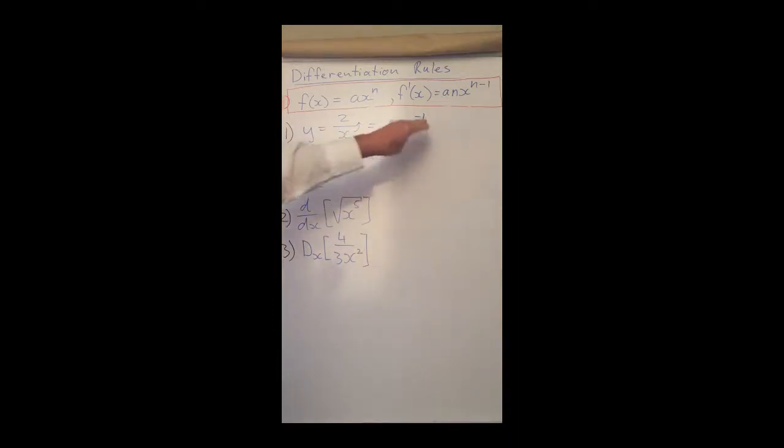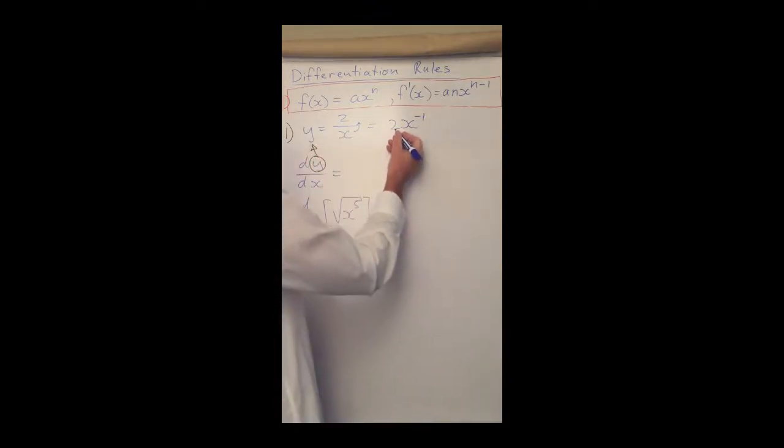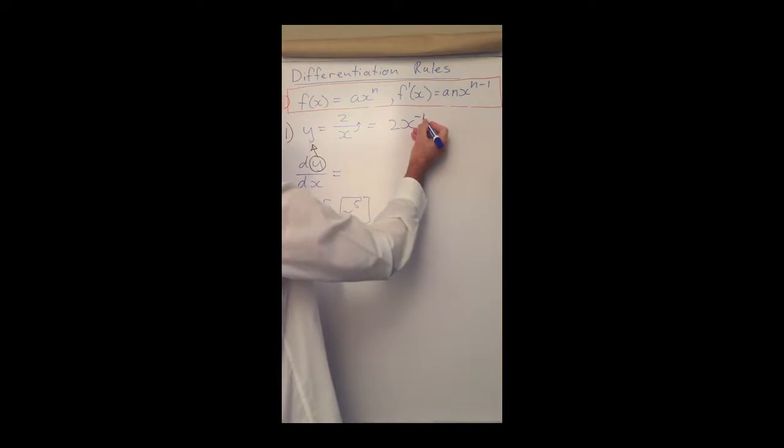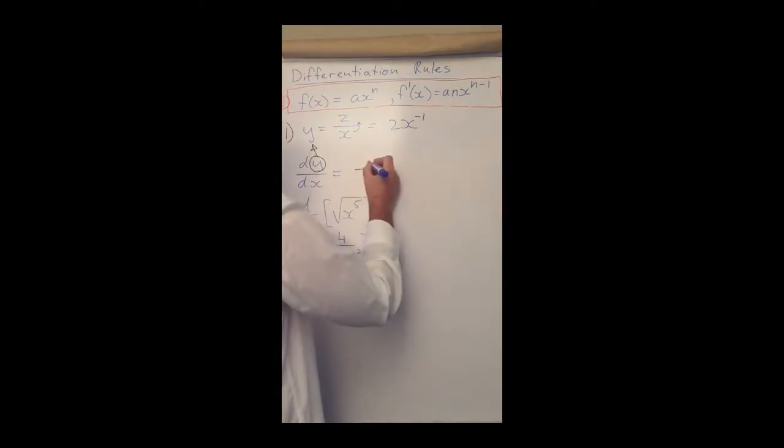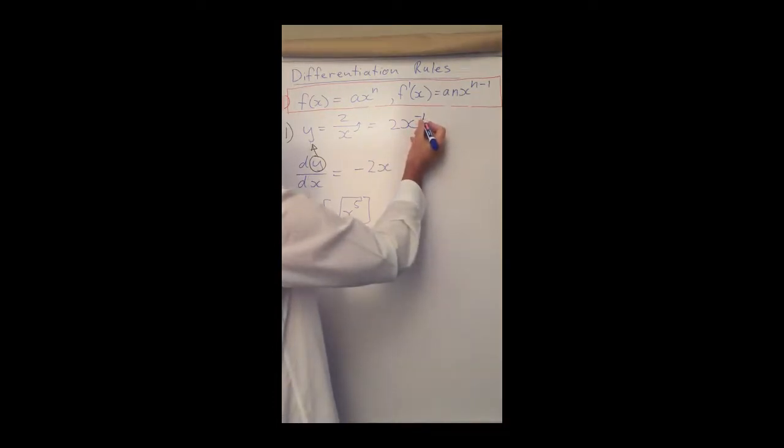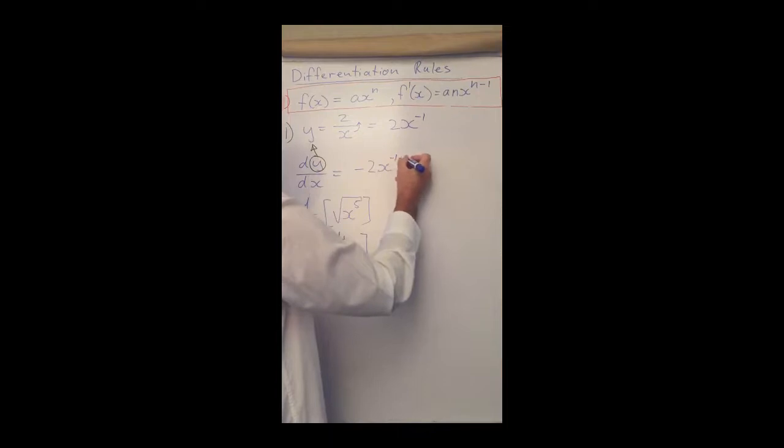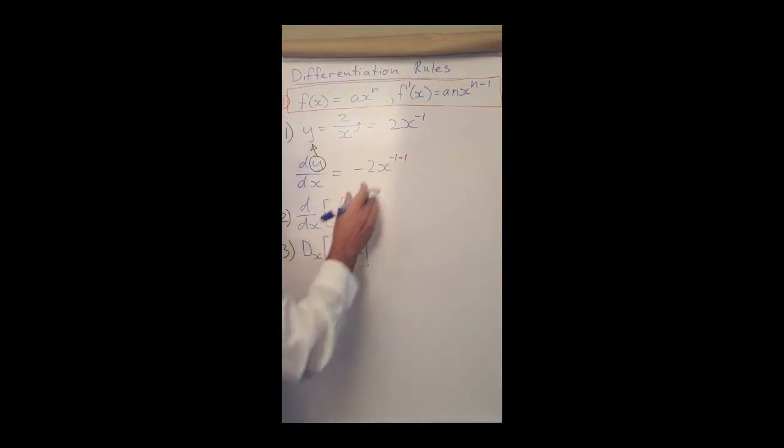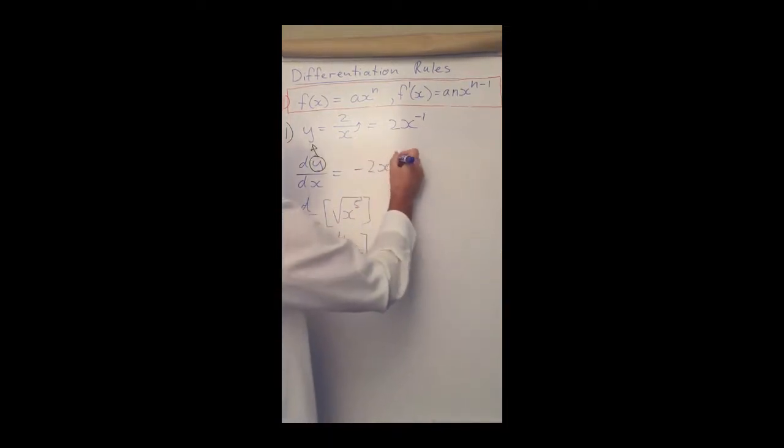We don't say gradient, we just say dy/dx. That means get the first derivative of 2x to the power of minus 1. So that's very easy now - it's 2 times minus 1 gives me minus 2, write down the x to the power of minus 1 minus another 1, and that gives me minus 2 over x squared.